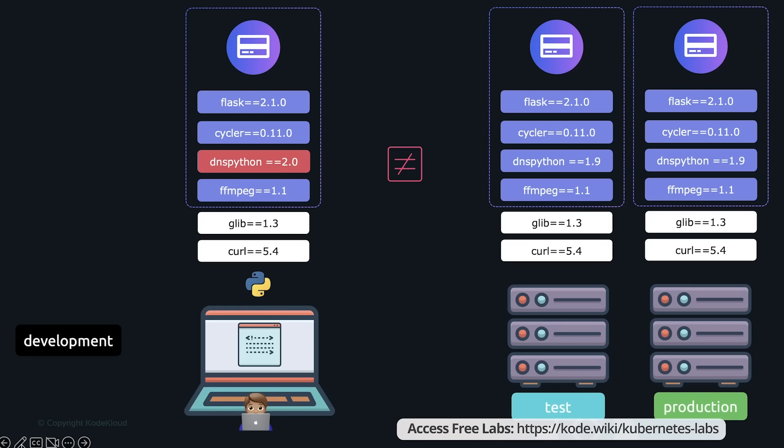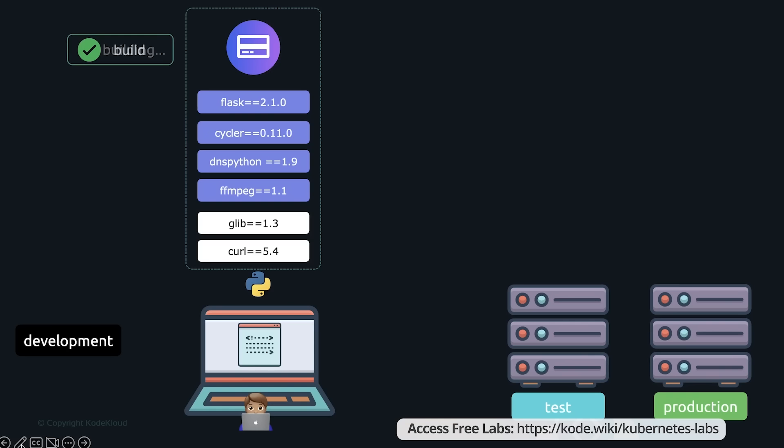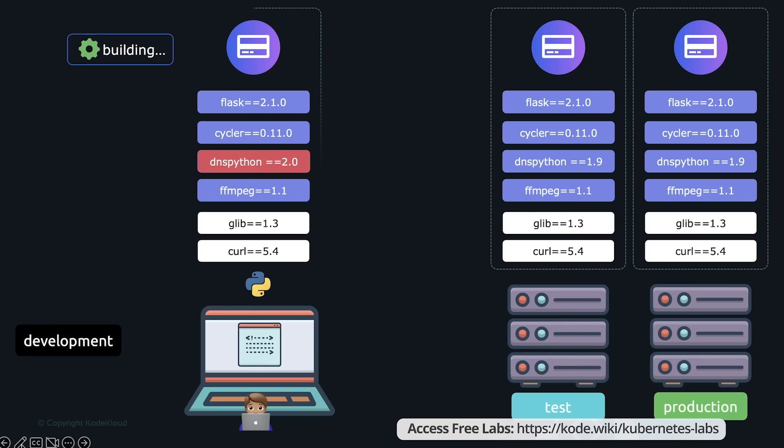At some point, someone is going to make a change to a dependency or add another dependency and forget to update the other environments, and things are going to break. What if you could build an image that consists of the app itself and all of its dependencies — both at the app level and the system level — package it, and use the exact same image in all different environments? That way, anytime you make a change, the image is rebuilt and the same image is used everywhere. No more differences between environments.